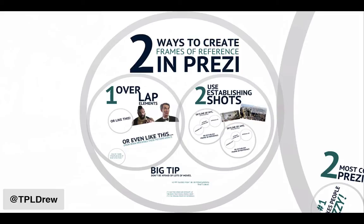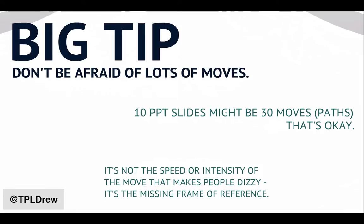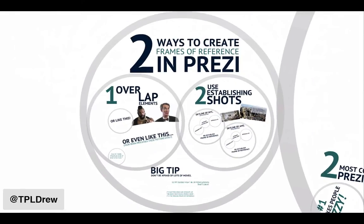The two ways to create frames of reference in Prezi are to overlap elements and use establishing shots. And I've got a big tip here: do not be afraid of using lots of moves, do not be afraid of lots of path numbers in your Prezi presentation. For example, if you have a 10-slide PowerPoint, don't be afraid if it ends up having 30, 40, or more paths — that's okay. You're actually helping the brain register every one of those moves so there's a cohesive motion, because it's not the speed or intensity of the move that makes people dizzy — it's the missing frame of reference.